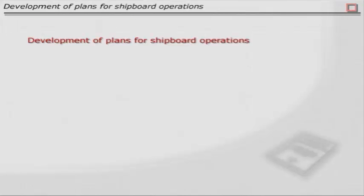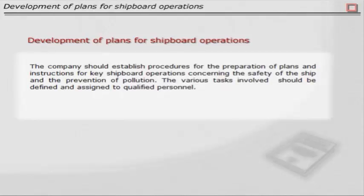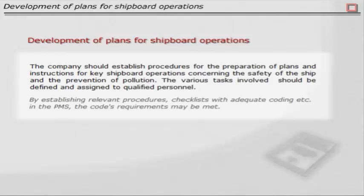Development of plans for shipboard operations: The company should establish procedures for the preparation of plans and instructions for key shipboard operations concerning the safety of the ship and the prevention of pollution. The various tasks involved should be defined and assigned to qualified personnel. By establishing relevant procedures and checklists with adequate coding in the PMS, the code's requirements may be met.